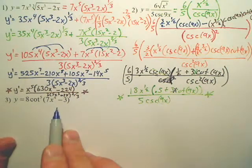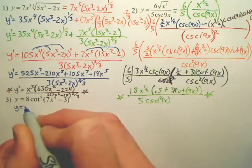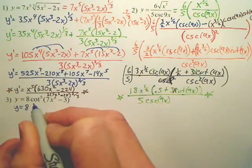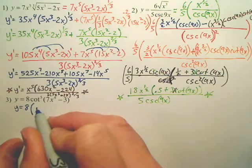Alright, this right here is a chain rule. I first want to rewrite it as 8, leave that on the outside, just leave it away. We're actually going to ignore that for a while.